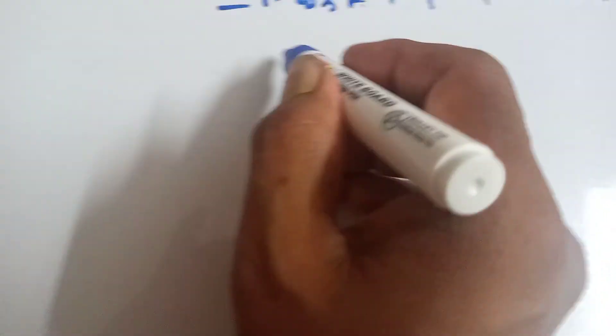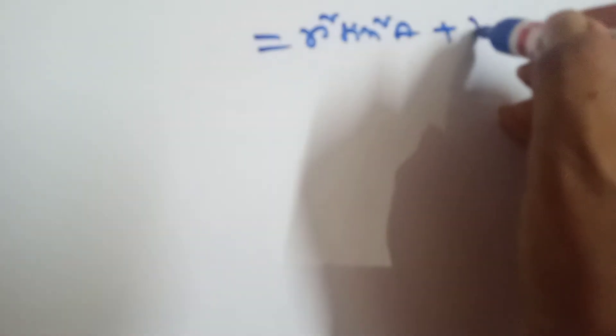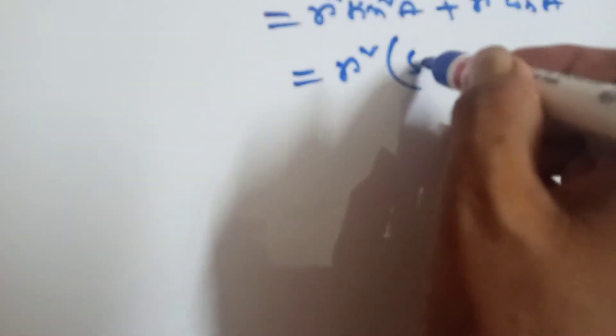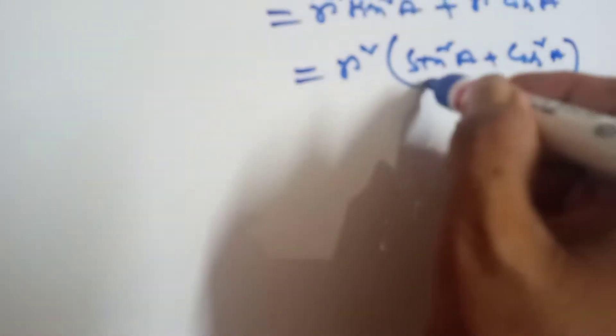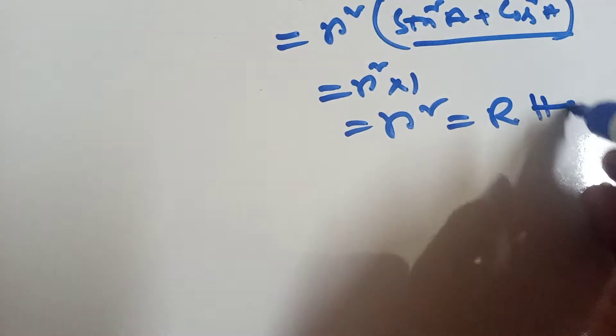That means R square into cos square A plus R square into sin square A. Now take R square common, leaving sin square A plus cos square A, which equals 1. That means R square into 1, which equals R square — the right hand side.